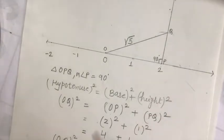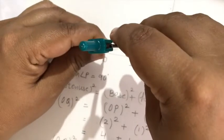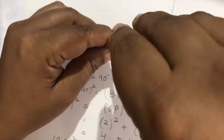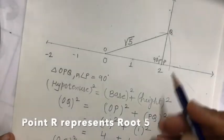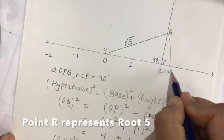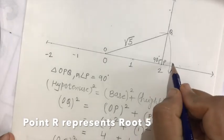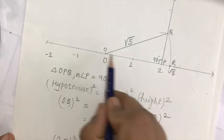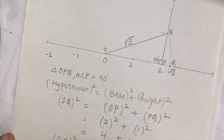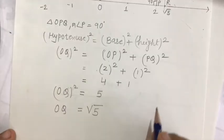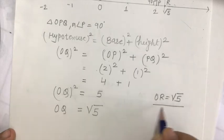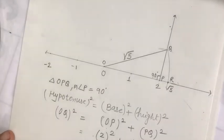Now this distance OQ is root 5. We should draw this on a number line, so measure the distance from O to Q and draw an arc here. You are getting here root 5 — name it R. So the distance from O to R is root 5, that is OR equals root 5.